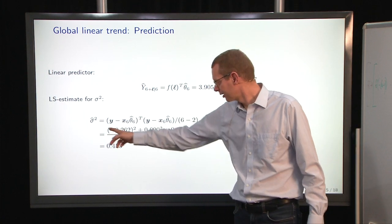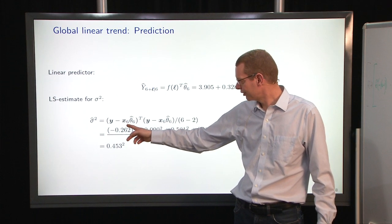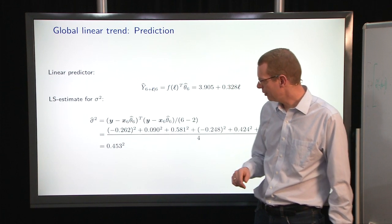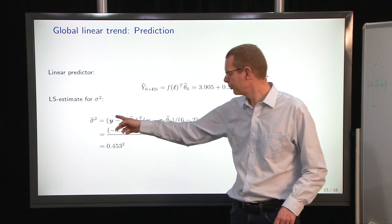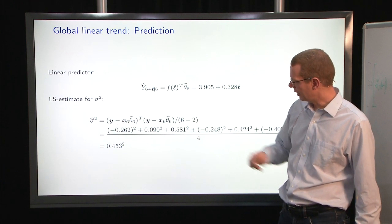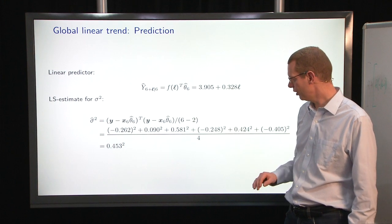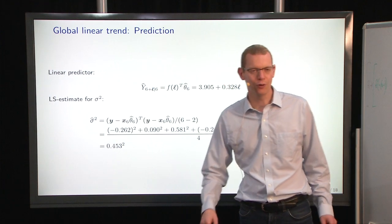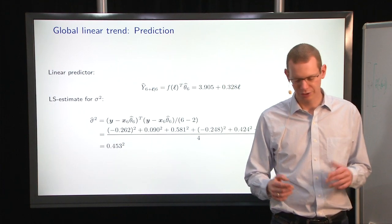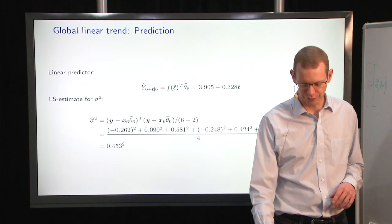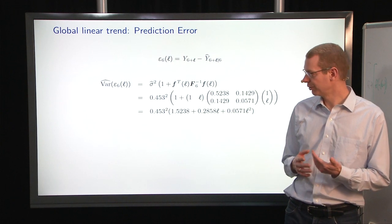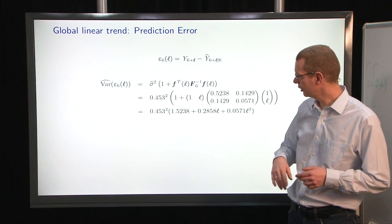We look at our design matrix at times x, times six, sorry, times the estimator here and look at sum of square prediction errors. We have six observations, and we have estimated two parameters, so we divide by four, and we get the sum, and it's 0.45 square. So the standard deviation is 0.45. That's what we need in order to do the prediction, because now we have an estimator of the uncertainty.